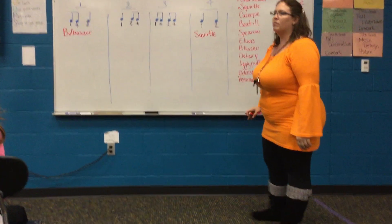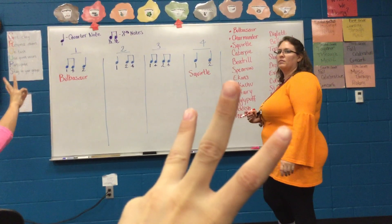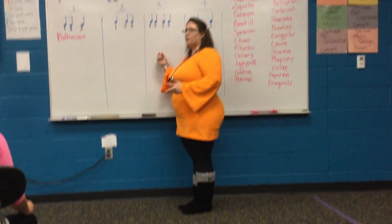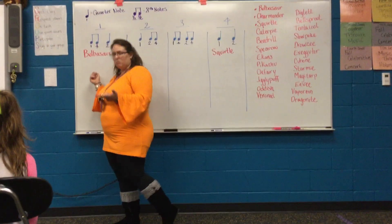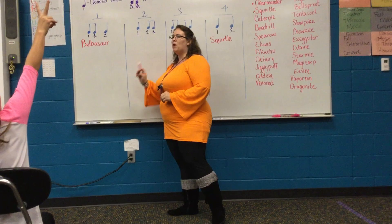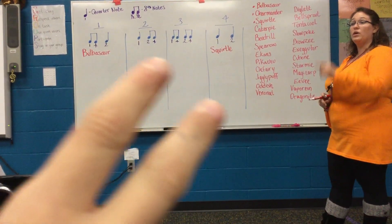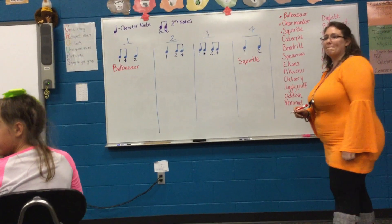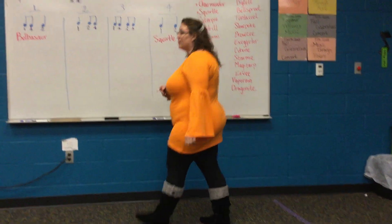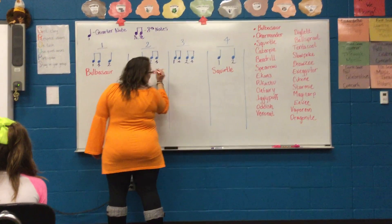The next one is Charmander. How many sounds are in Charmander? Show me with your fingers. Three — good. Could Charmander go in four? No. We need to listen for where the long and short sounds are. Show me with your fingers which box Charmander belongs in. That's right — the slow sound is at the beginning and the two faster sounds are at the end, so Charmander goes in box two.